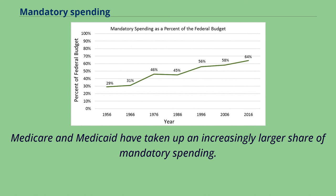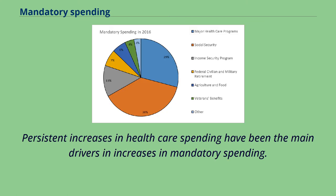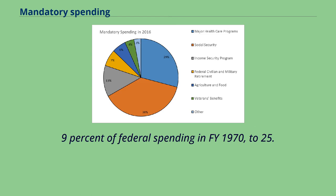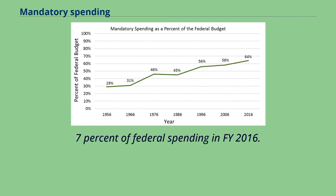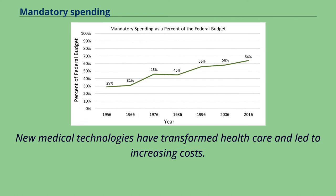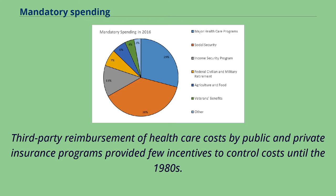Medicare and Medicaid have taken up an increasingly larger share of mandatory spending. Persistent increases in healthcare spending have been the main drivers of increases in mandatory spending. Mandatory spending on healthcare has grown from 4.9% of federal spending in FY 1970 to 25.7% of federal spending in FY 2016. Healthcare cost per capita has grown much faster than the economy, and new medical technologies have transformed healthcare and led to increasing costs. Third-party reimbursement of healthcare costs provided few incentives to control costs until the 1980s.